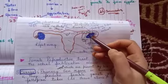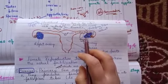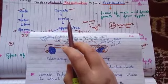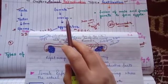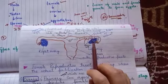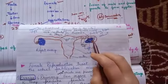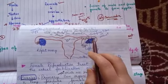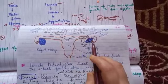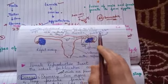Ovaries are the primary reproductive organs of the female, where the ova — egg cells — are produced. The females have primary reproductive organs as ovaries, and they produce egg cells. This is the location of the ovaries inside our body, and they are connected with the fallopian tubes towards the uterus.